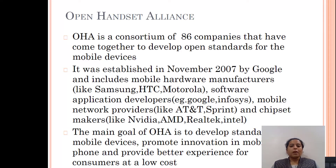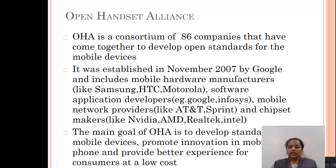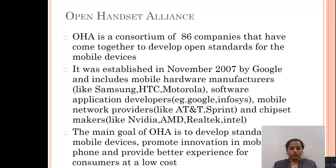It was established in November 2007 by Google and it includes four basic components: mobile hardware manufacturers like Samsung, HTC, Motorola; software application developers like Google and Infosys; mobile network providers like AT&T and Sprint; and chipset makers like NVIDIA, AMD, Realtek, and Intel. The main goal of OHA is to develop standards for mobile devices, promote innovation in mobile phones, and provide a better experience for consumers at a lower cost.